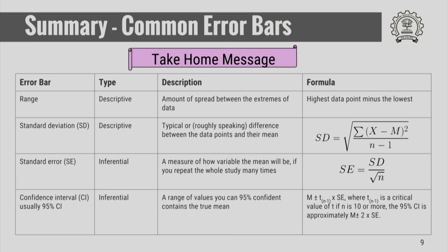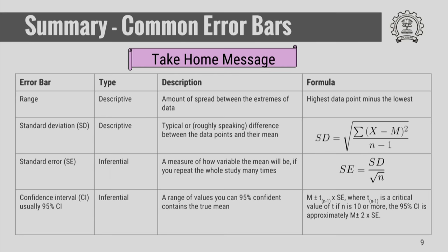This is the summary of the lecture on error bars. Error bars can be of two types: descriptive error bars or inferential error bars. Range and standard deviation are called descriptive error bars because they give you an idea about the spread of the data, while standard error and confidence interval are called inferential error bars because they help you draw conclusions from the data.